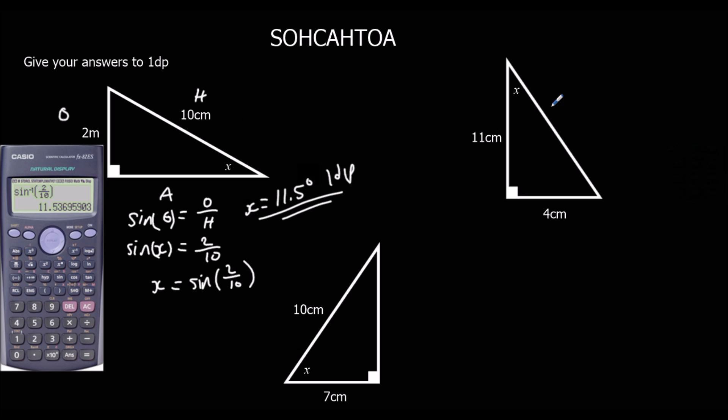Okay, let's go up here. So, we've got H, we've got O, we've got A. H is by himself. So, we don't use H, we use TOA. So, tan theta equals opposite over adjacent. In this example, tan x equals 4 over 11. To get tan away from x, to get x away from tan, either way around, we shift tan.